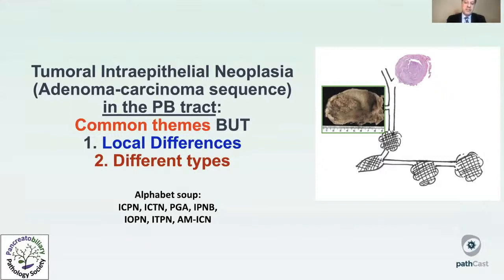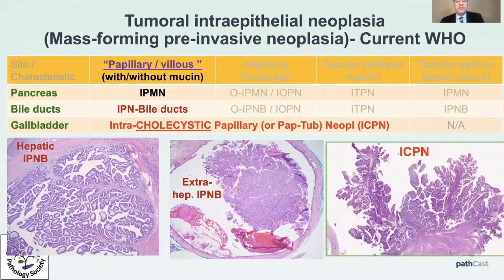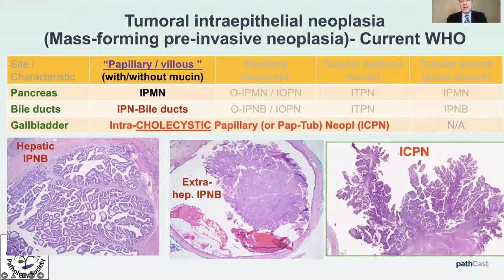There are various entities that fall under this umbrella category with common themes — pre-invasive, mass-forming — but with local differences. An ITPN can occur in any part of the pancreaticobiliary tract but shows differences depending on location. There is an 'alphabet soup' of entities. In the pancreas, papillary villous examples are referred to as IPMN; in the bile ducts they are called intraductal papillary neoplasms of bile ducts (IPNB); and in the gallbladder they are called intracolecystic papillary or papillary-tubular neoplasms (ICPNs).